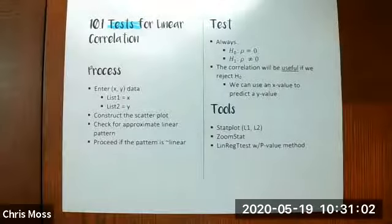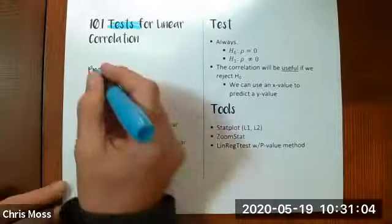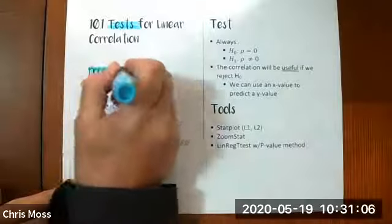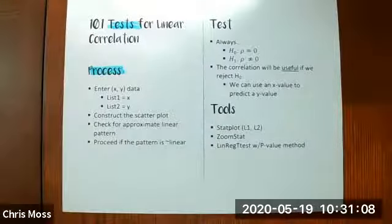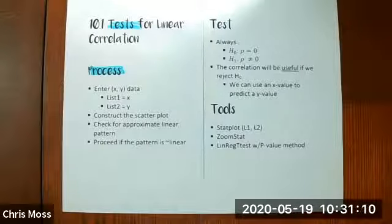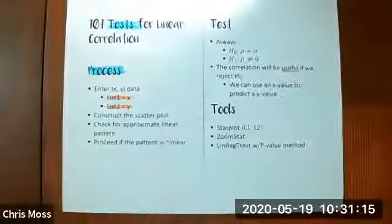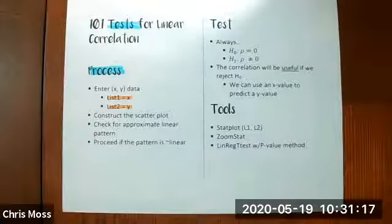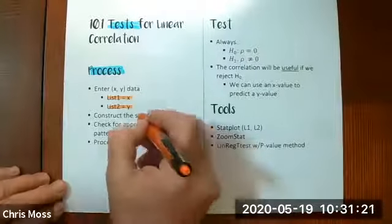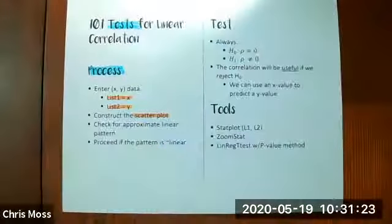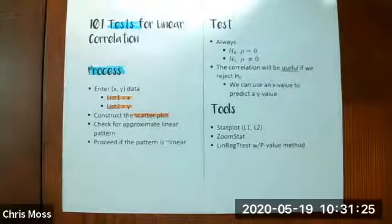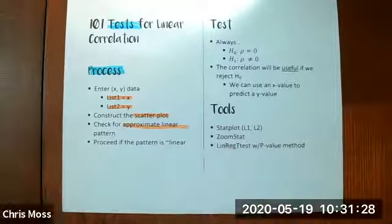I don't have to worry about left tail, right tail, two tail. You'll see. We have a very precise process. We want to make sure we enter in our X and our Y data. I'll use list one for X and list two for Y. Use any list obviously as long as you take a look at the scatter plot.